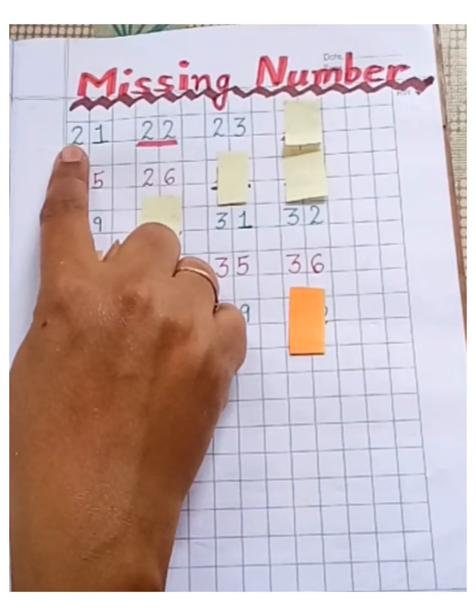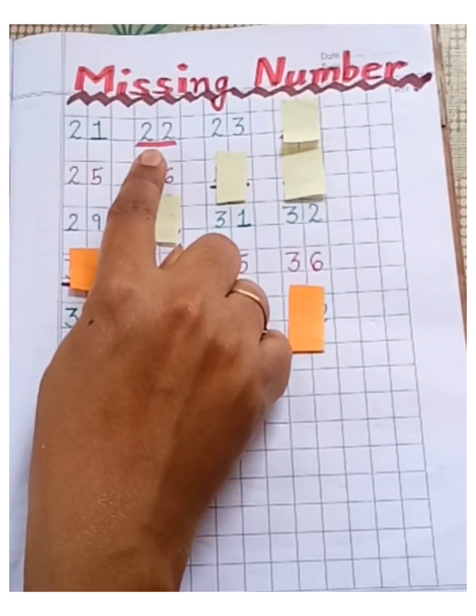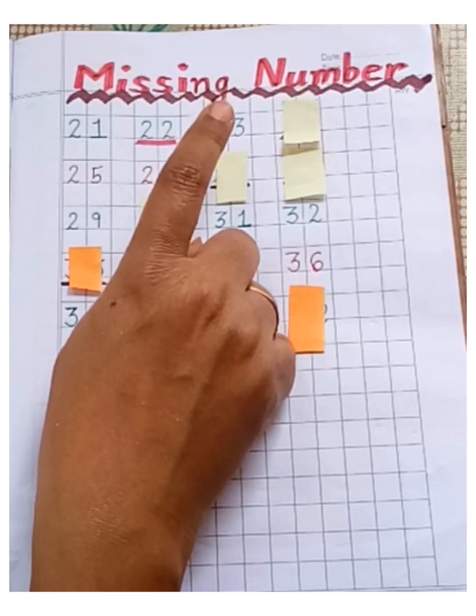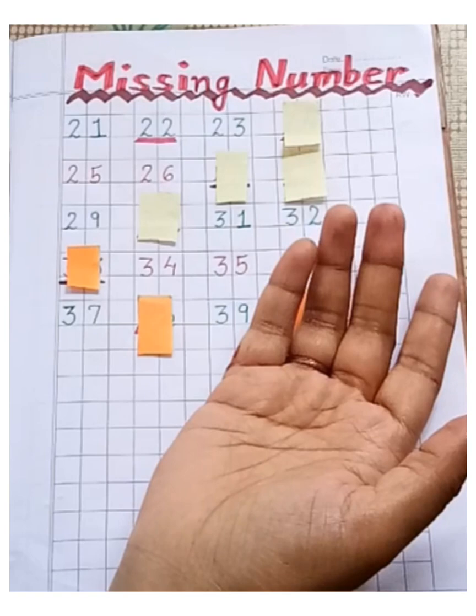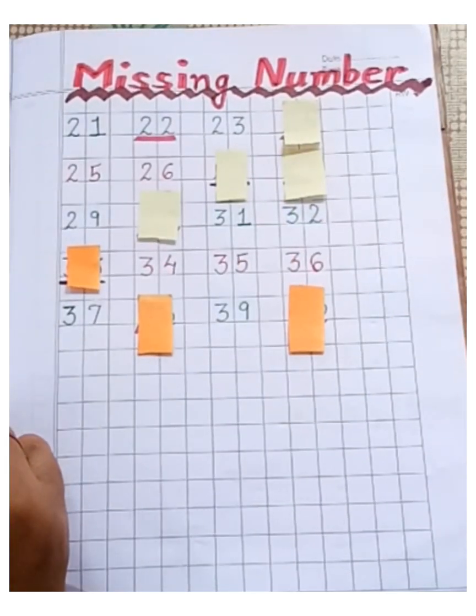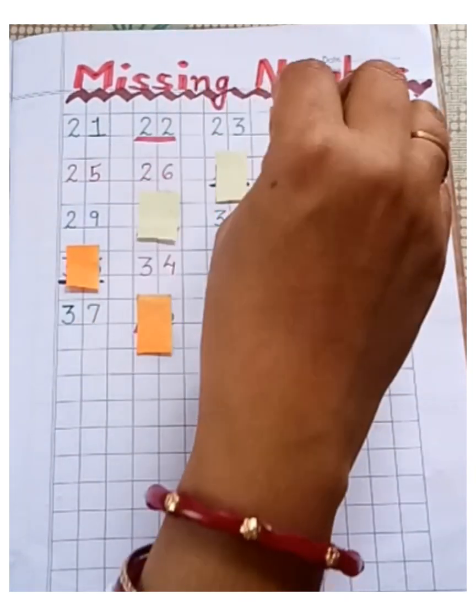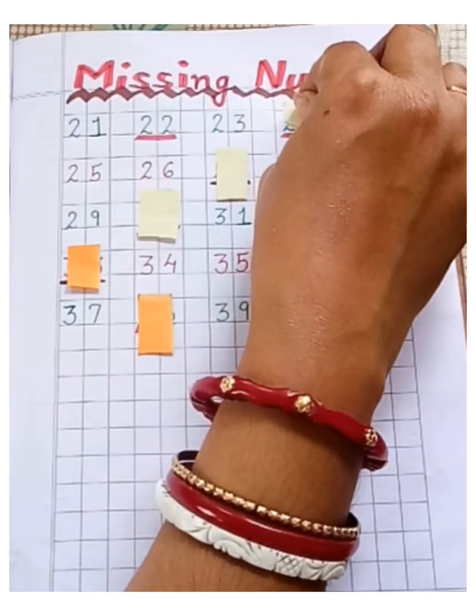Now, 21, 22, 23. Now which number? Oh, again number is missing. Let's find out. It's 24.